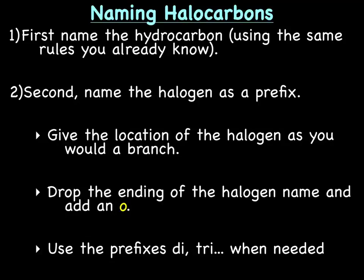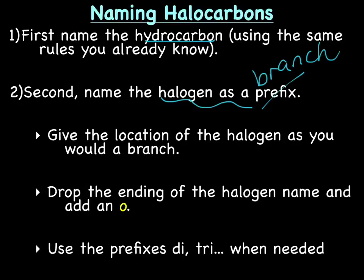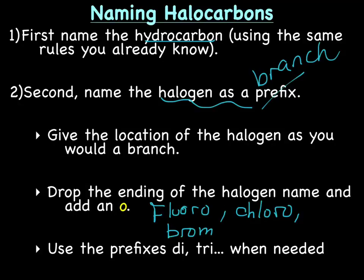Let's name halocarbons. The first thing you do is name the hydrocarbon using the same rules you already know: find the parent chain, count the carbons, use the appropriate prefix, and use -ane, -ene, or -yne as an ending, and find the branches. Next, name the halogen as a branch — not as a prefix, as a branch. Give the location of the halogen as you would any other branch. The way you change the name of the halogen is you drop the ending and add an -o: fluoro, chloro, or bromo.